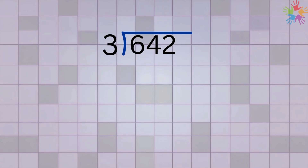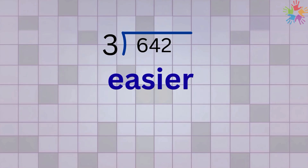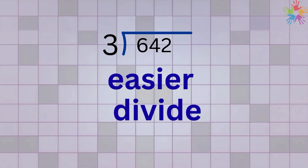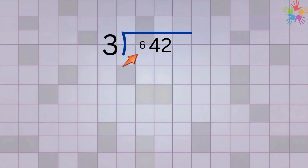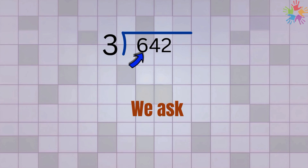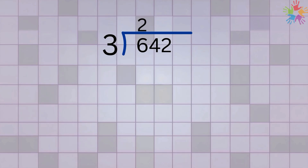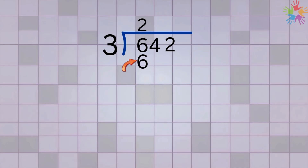We always work from left to right, which keeps the digits smaller and easier to divide. We start with the first digit, which is 6. We ask: how many times does 3 go into 6? Three goes into 6 two times, so we write 2 on top above the 6. Then we multiply: 2 times 3 equals 6, and we write that 6 under the original 6.